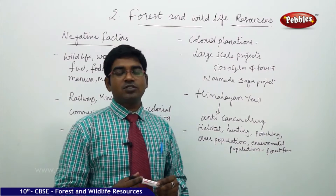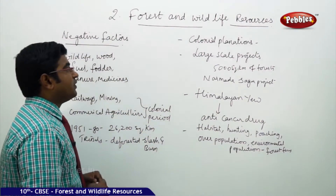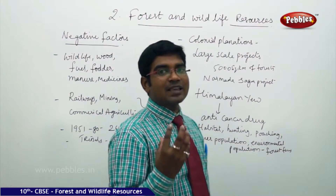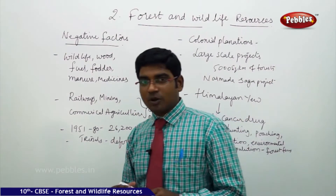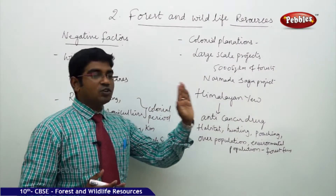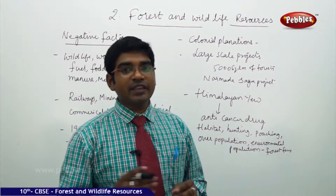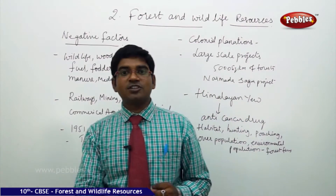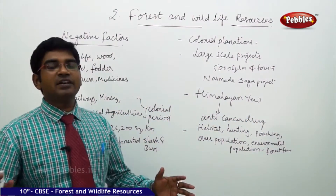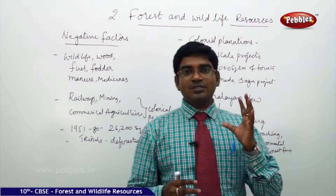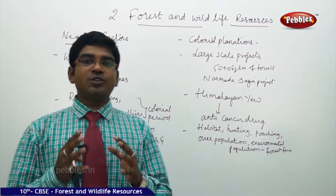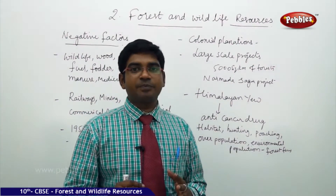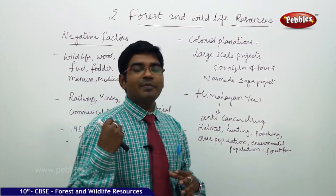Deforestation on a very large scale is also due to colonial plantations and large-scale projects. For example, the Narmada Sagar project cleared nearly 5,000 square kilometers of forest land — a very astonishing fact. Today, because of modernization and urbanization, large forest lands are being cleared for MNC factories and large dams, at the cost of forest lands. The tribal community people are still struggling for their rights, and when the Narmada Sagar project was built, many Andolan movements were raised.